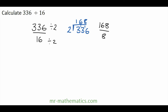Now we can use the short method of division for this question. Divide both by 8. And 168 divided by 8: 8 goes into 16 once, 8 goes into 28 giving 16, and 8 goes into 8 once. And 8 divided by 8 is 1, so the answer is 21.